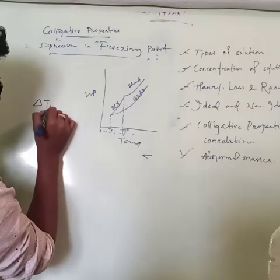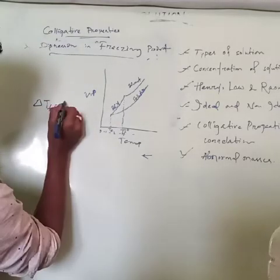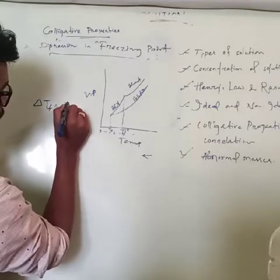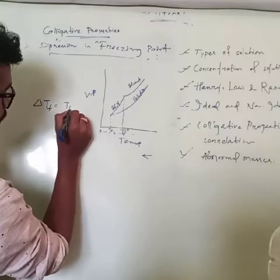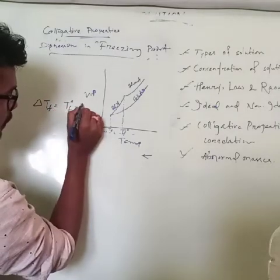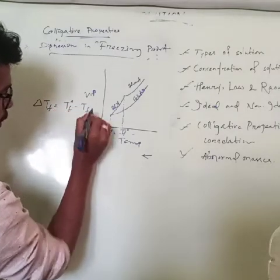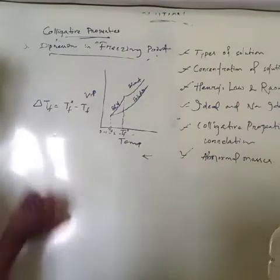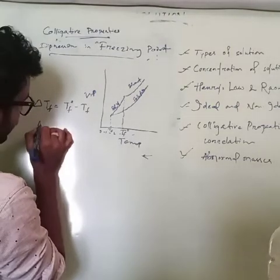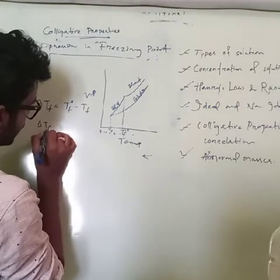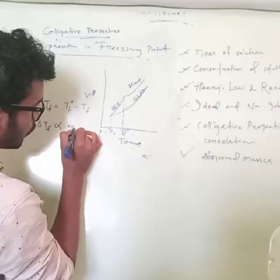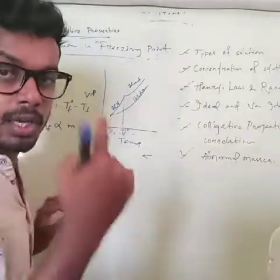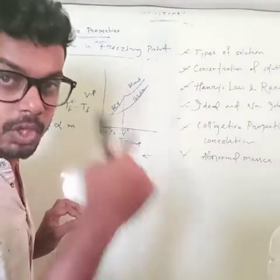ΔTf equals TF⁰ minus TF — the difference between the freezing temperature of the pure solvent and the solution. ΔTf is directly proportional to molality, because it depends on the number of solute particles.